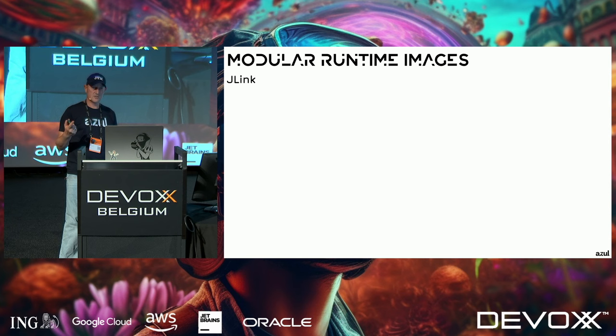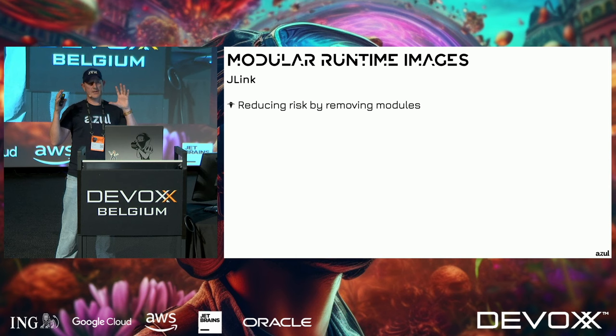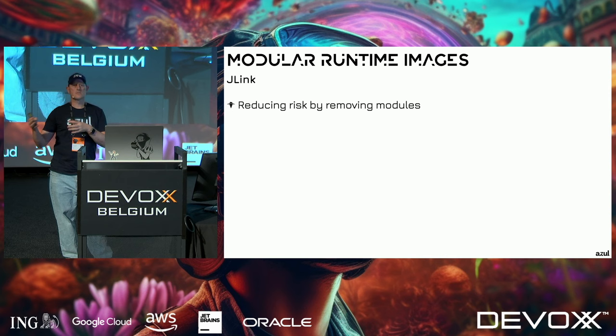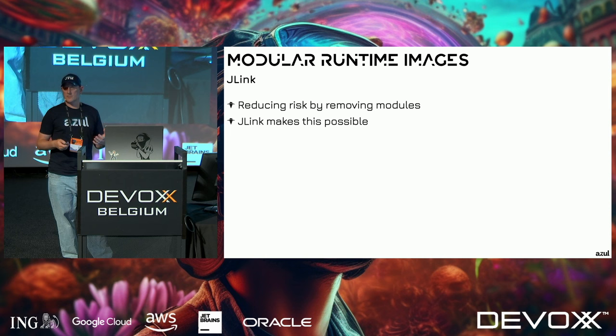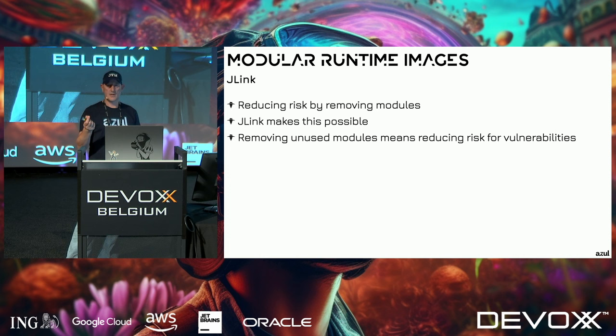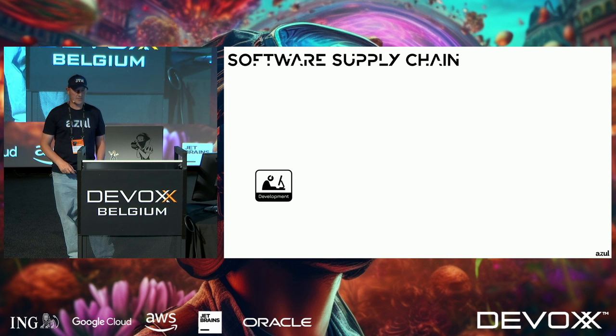Now, modular runtime images and J-Link. J-Link can create a Java runtime environment tailored specifically for your application — stripping down the JDK to only the parts your application needs. Removing unused modules means reducing the risk of vulnerabilities. Hackers cannot attack what isn't there, so you should seriously consider using J-Link to create custom runtime images.